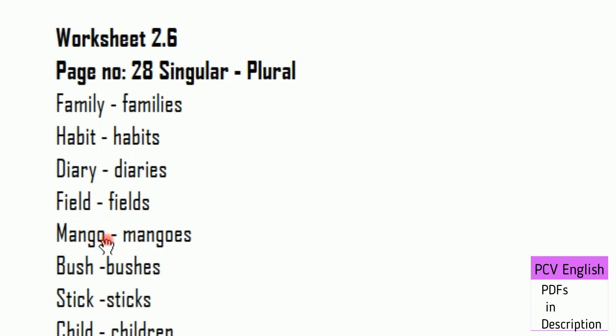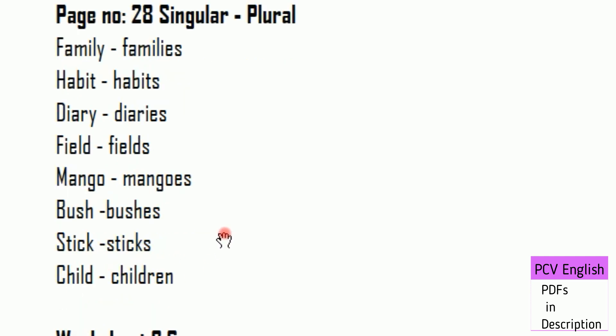General rule: words ending in S, H, or O — add E, S. Words ending in CH or SH — add ES. For example: Bush becomes Bushes.